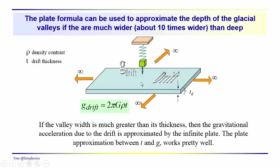Stewart develops this idea: if the glacial valleys are quite wide compared to their thickness — that is, the drift valleys are much thinner than the valleys are wide — we can use the plate approximation to estimate the thickness of the drift. So we have our corrected gravity anomaly over the glacial valleys and we could just use the plate approximation to estimate the thickness. This works pretty well if the valleys are fairly wide — about 10 times wider than they are deep.